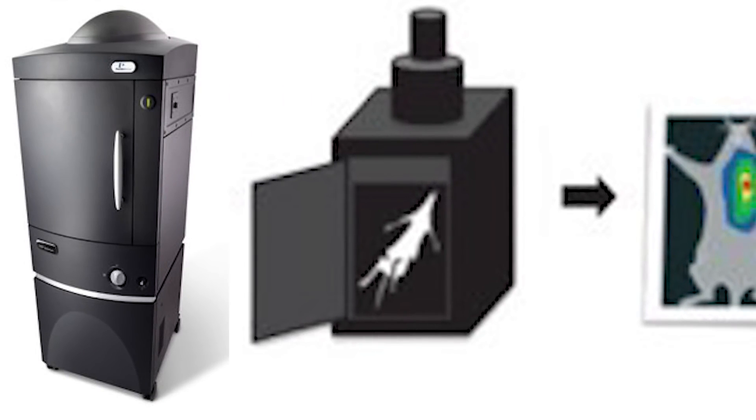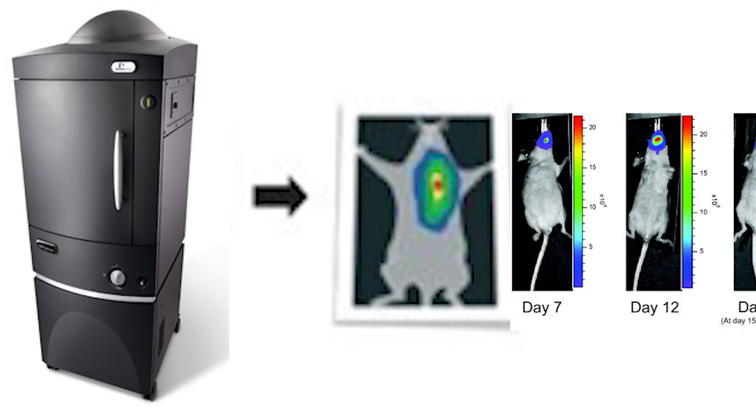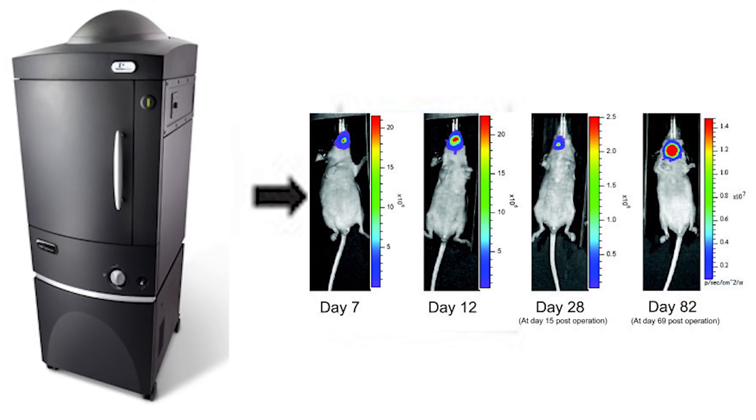The device measures the photoluminescent signal and photons, and overlays the data onto an image. The injection of luciferin and the subsequent imaging processes can be repeated to track the position of the cells over time.